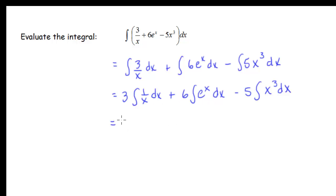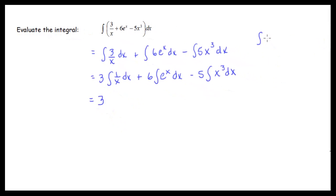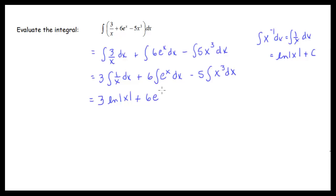Now I'll do the antiderivative. The integral of 1 over x is the case where we have x to the negative 1, and we have a special rule for this — the log rule. So this gives us the natural log of the absolute value of x. The integral of e to the x is just e to the x. For the last term, I apply the power rule: 5 times x to the 3 plus 1, divided by 3 plus 1. I have my plus c at the end. My integral sign and dx have disappeared, replaced by that plus c.